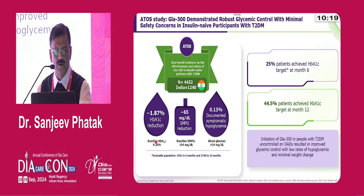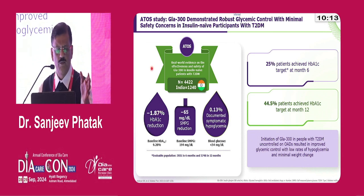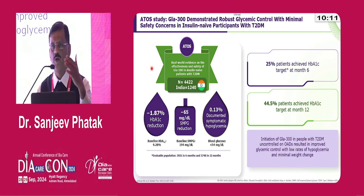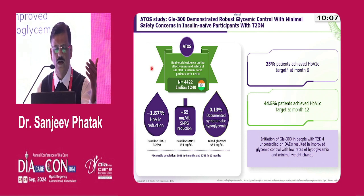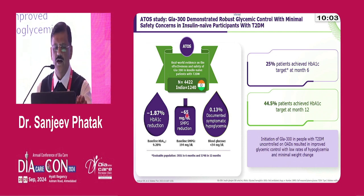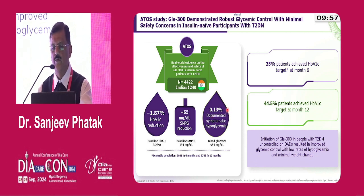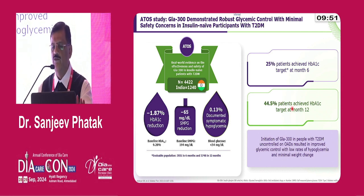In the ATTO study, from a baseline A1c of 9.28, there was a 1.87 percent reduction — so A1c came down to about 7.3 or 7.4 — a very good reduction when you initiate and up-titrate insulin. There was a 65 mg/dL reduction in self-monitored plasma glucose, very minimal increase in hypoglycemia risk, with about 25 percent achieving target at month six and 45 percent at 12 months.